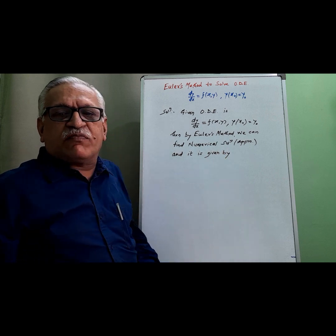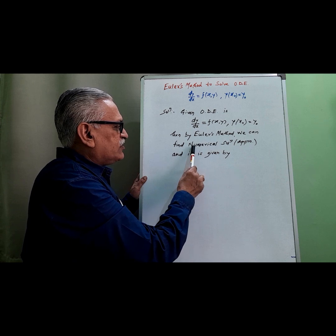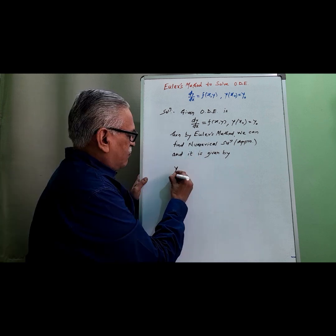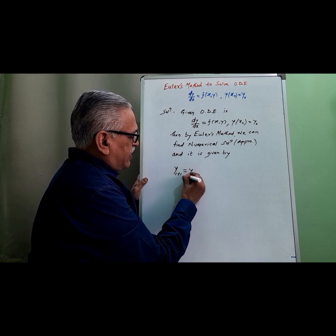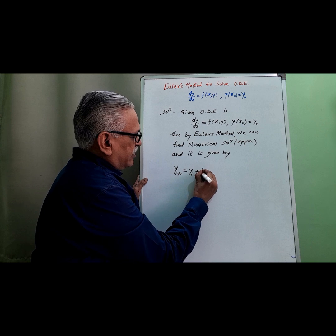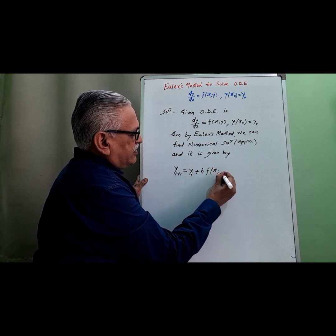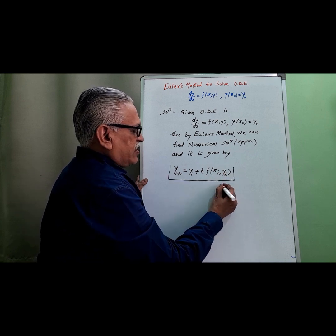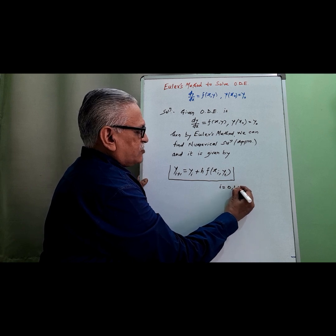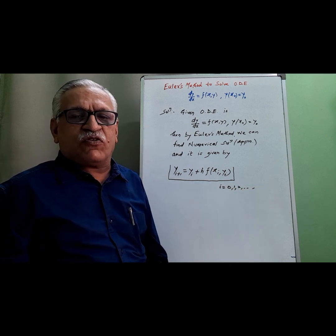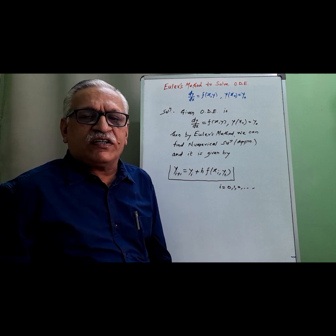By Euler's method, we can obtain the approximate solution numerically, and it is given by yi plus 1 is equal to yi plus h into f of xi yi, where i is equal to 0, 1, 2, and so on. This formula is called Euler's formula or Euler's method formula to find the solution of an ordinary differential equation.